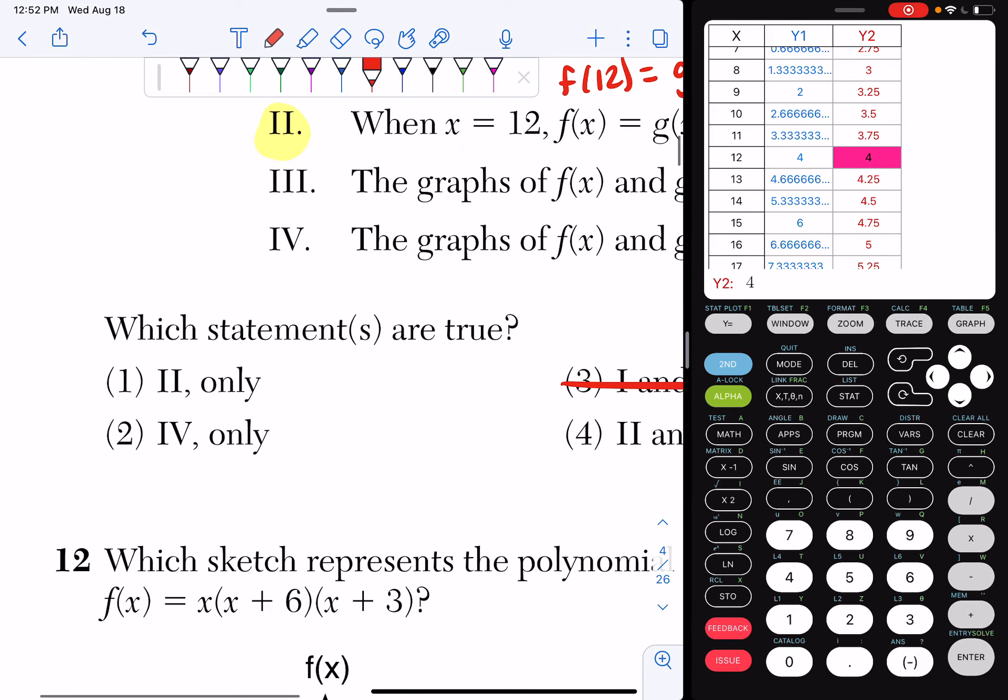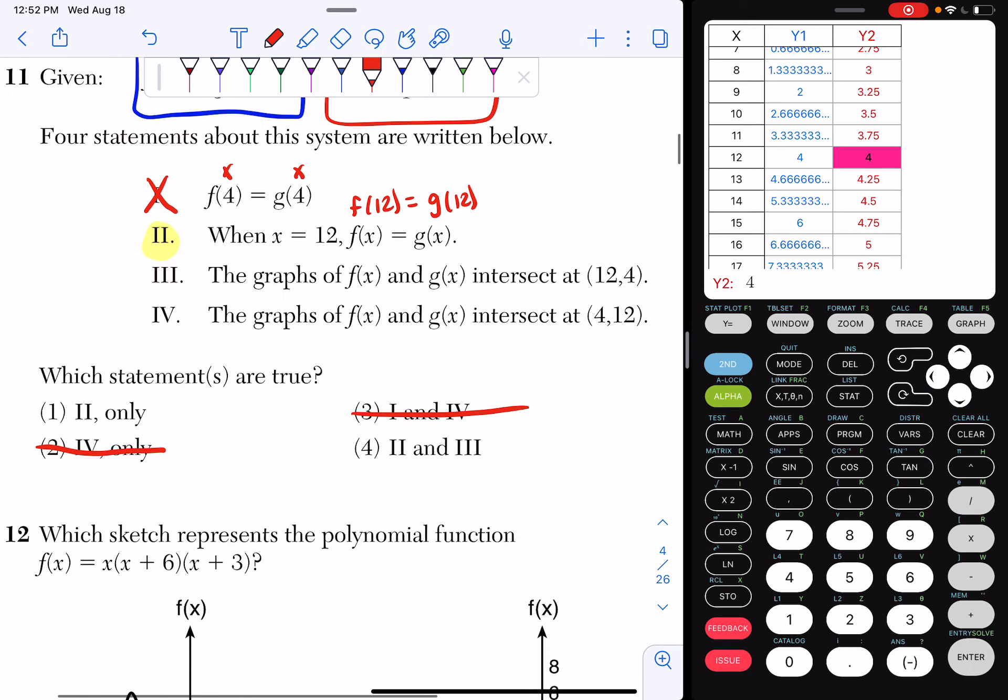So I know that it can't be choice 2 because that says only Roman numeral 4. So right now it has to be choice 1 or choice 4.